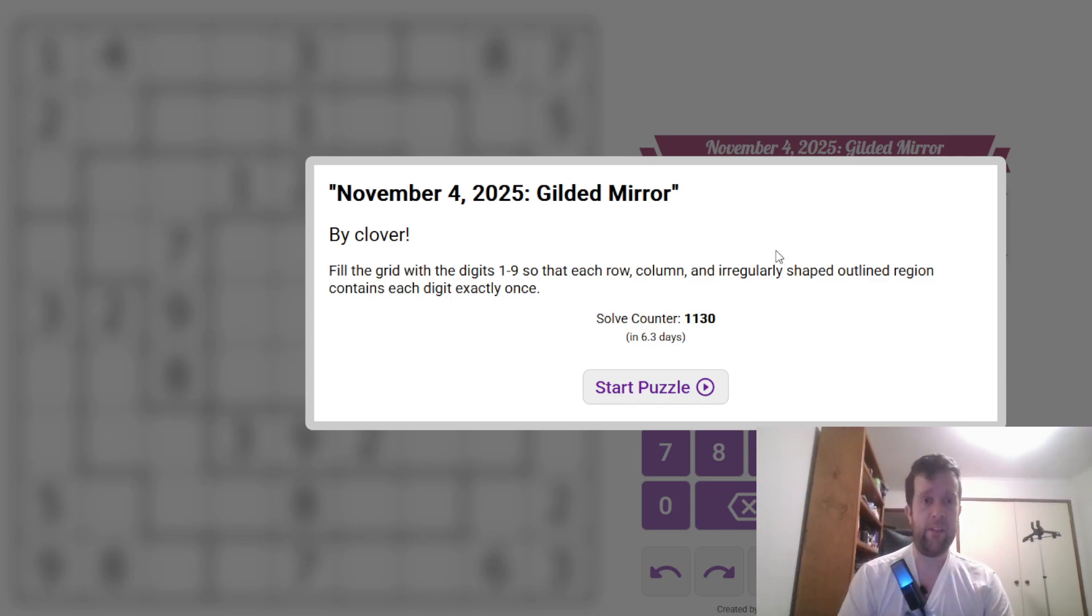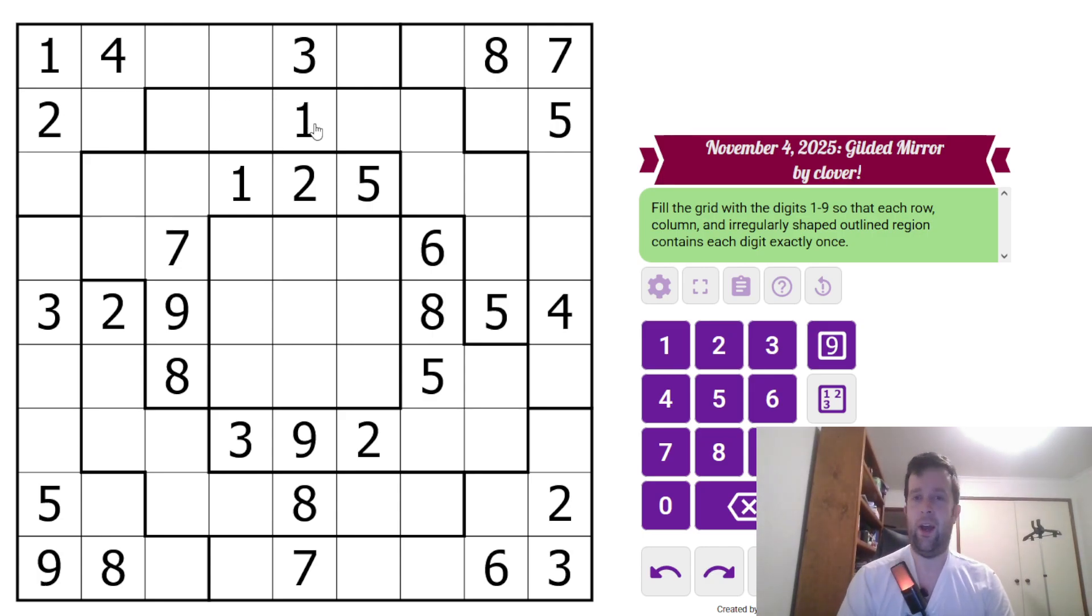That being said, I'm gonna get into it. So this is an irregular puzzle. Irregular Sudoku. What does that mean? It means fill the grids with digits one to nine so that each row, each column, and each outlined region contains each digit exactly once. That's it. That's all you need to know to solve today's puzzle.